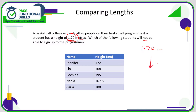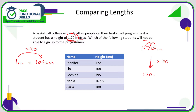So, 1.70 meters — I'm going to convert that into centimeters. Remembering that 1 meter is 100 centimeters, to go from meters into centimeters we multiply by 100. So 1.70 multiplied by 100: we move the decimal point 2 positions, giving us 170.0 — in other words, 170 centimeters.